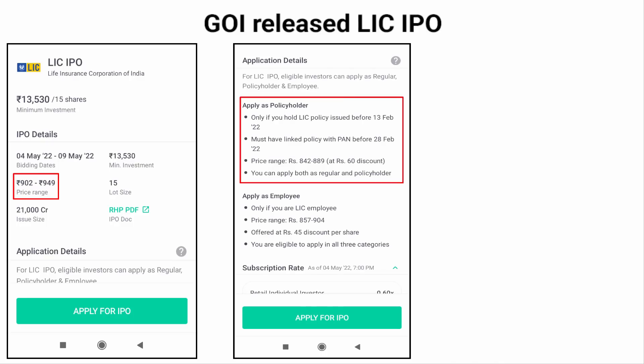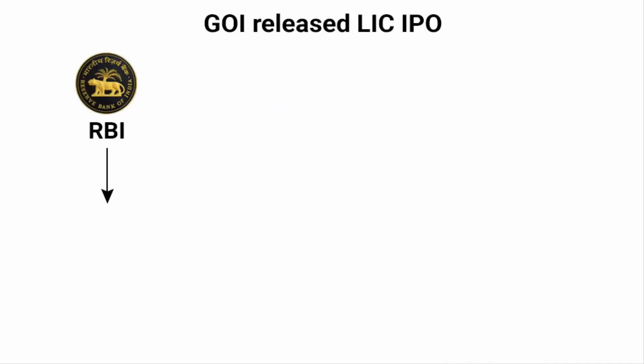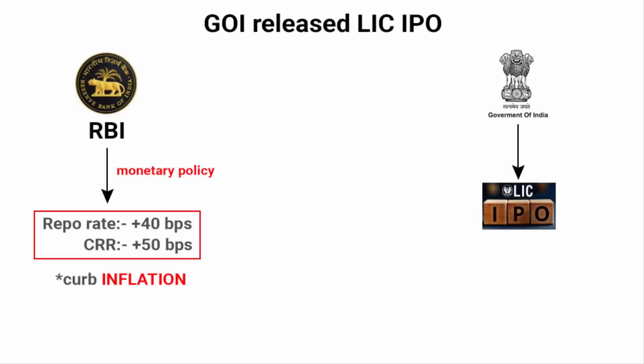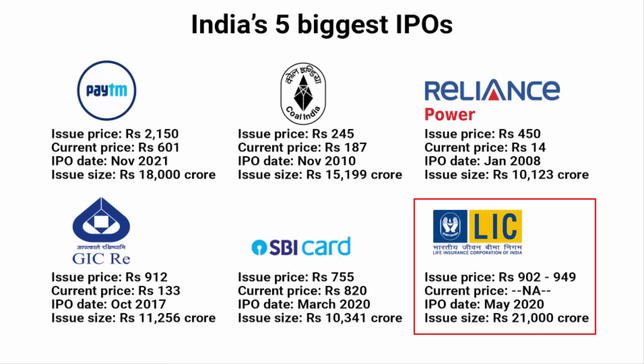If you are a LIC policyholder, you get a 60 rupees discount on each share. If you are planning to invest, I want you to look at this situation critically. Compare LIC with India's 5 biggest IPOs — Coal India, Paytm, Reliance Power, General Insurance, and SBI Cards. If you look at their issue size, initial price, and current price, you will come to the conclusion that LIC's share price is comparatively low. Plus, all other big IPOs are currently in huge losses. Also note that the previous price at which the government wanted to issue LIC shares was set at 2000 to 2100 rupees back in March.